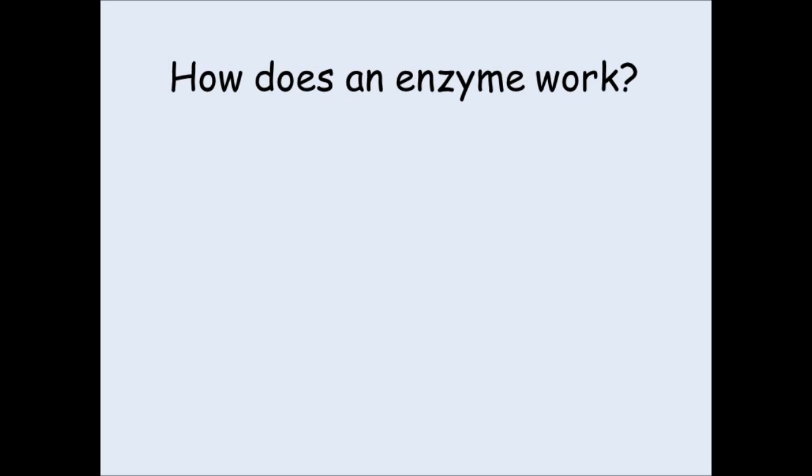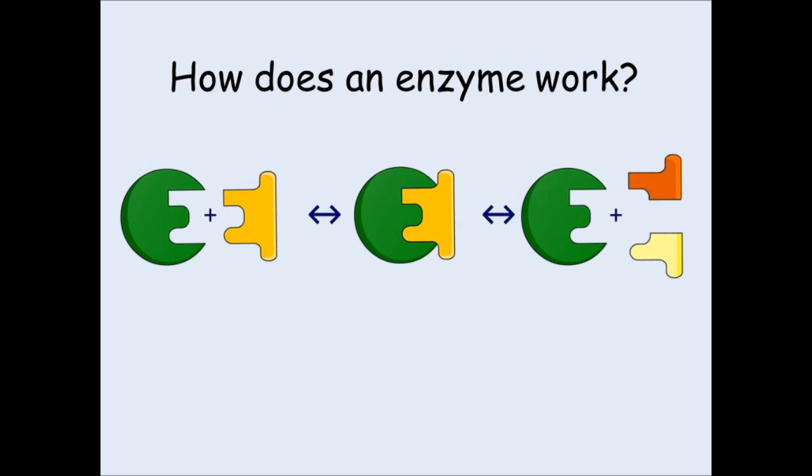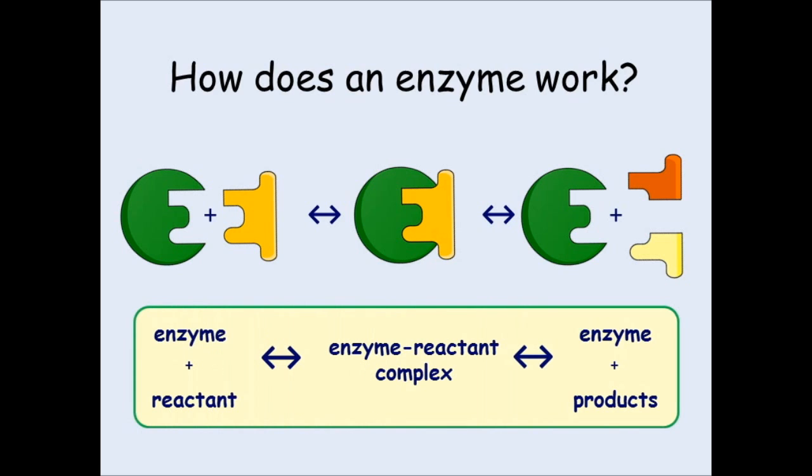So how does an enzyme work? Well there are two ways depending on what type of reaction the enzyme is needed to help speed up. Now the enzyme in these diagrams is the green drawing that looks like the capital letter E. Now if we go from left to right you'll see that the enzyme is being used to take a large molecule and break it into two smaller pieces.